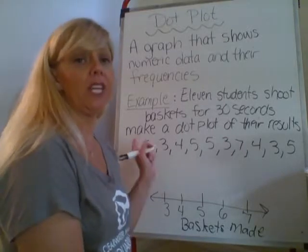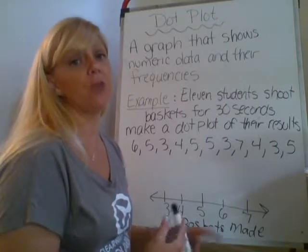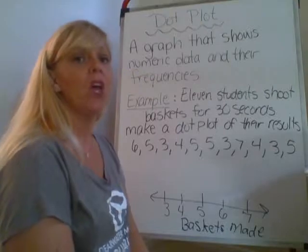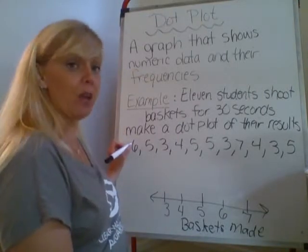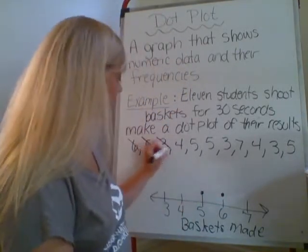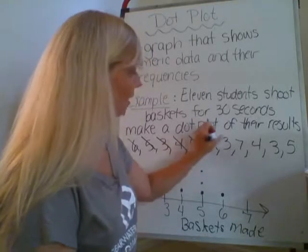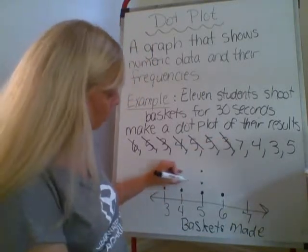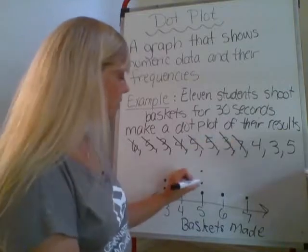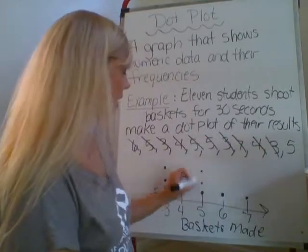Now we're going to make a dot above each of our data results. We'll space them out equally, making sure they go up at the same level each time with no major gaps or clusters. So we have a 6, a 5, a 3, a 4, another 5, a 3 — going straight across from the other dot — a 7, a 4 — straight across again — another 3, and another 5.